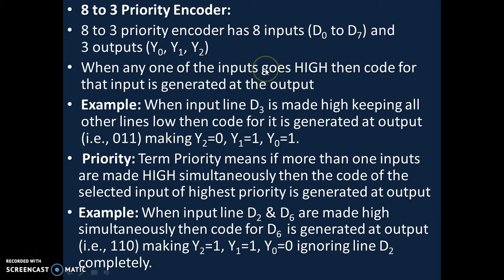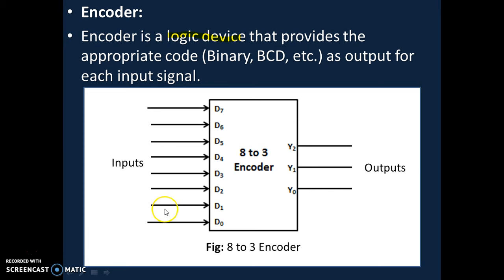When any one of the inputs goes high, the code for that input gets generated at the output. For example, when input line D3 is made high keeping all other lines low, the code for 3 is generated at the output. Code for 3 is 011, making Y2=0, Y1=1, Y0=1. If D1 is made high, the code for D1 — which is 001 — gets generated, so Y2=0, Y1=0, Y0=1. That's the working of the normal 8-to-3 encoder.